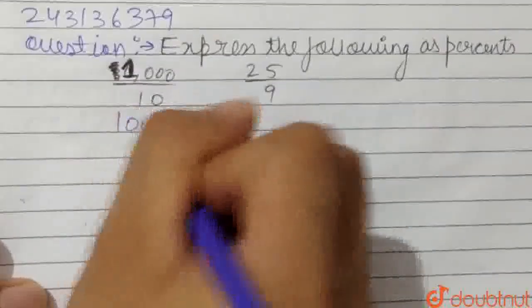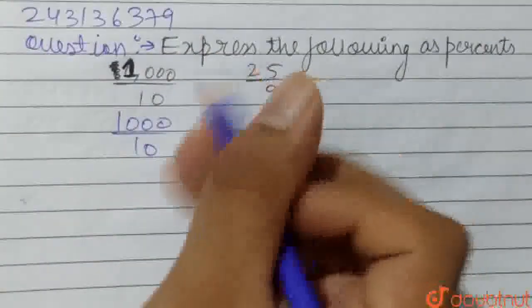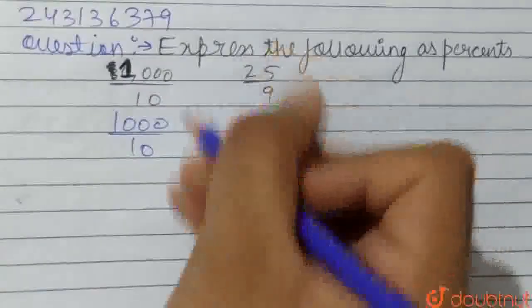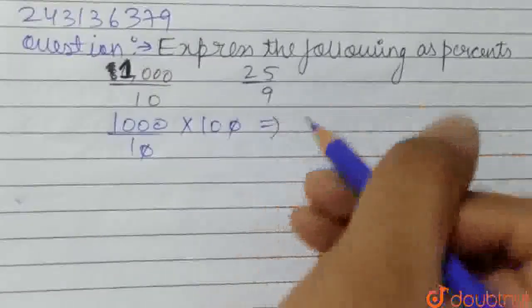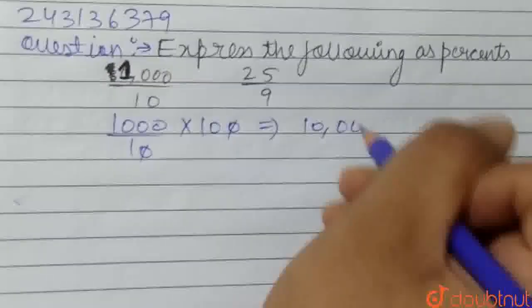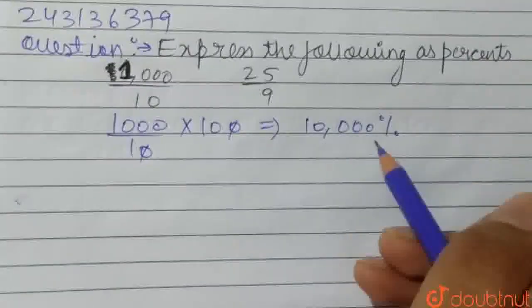So, for 1000 upon 10, we need to express this fraction as a percentage. For converting any fraction into percentage, we just need to multiply by 100. Just cancel 10 by 10, we get 10,000 percent. So this is the percentage conversion of this fraction.